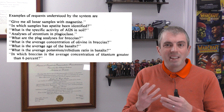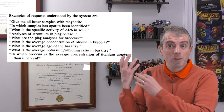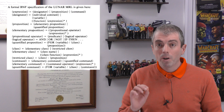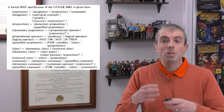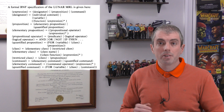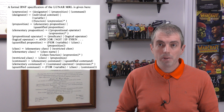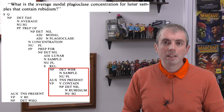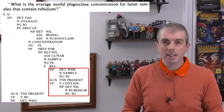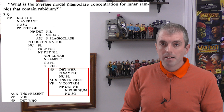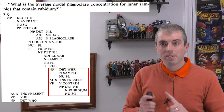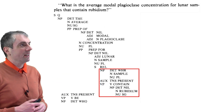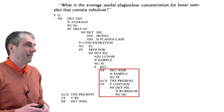It can do this by converting the rich questions that it got into a recursive grammar. But before it could do that, it needs to analyze the grammatical structure of the input question. For example, the question 'what is the average modal plagioclase concentration for lunar samples that contain rubidium' is analyzed with the following parts of speech. Notice that it's important to detect things like relative clauses, which restrict the level of analysis.